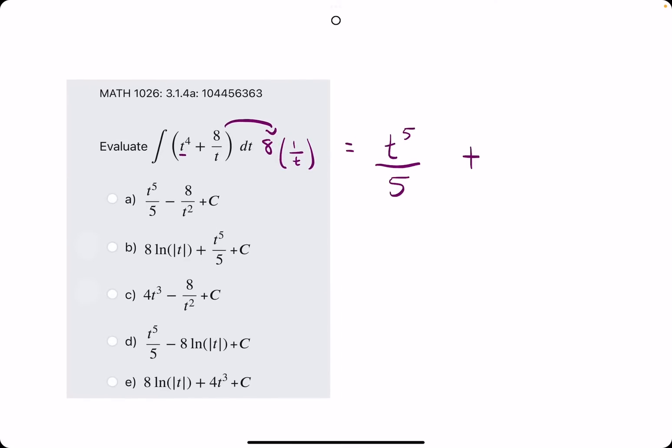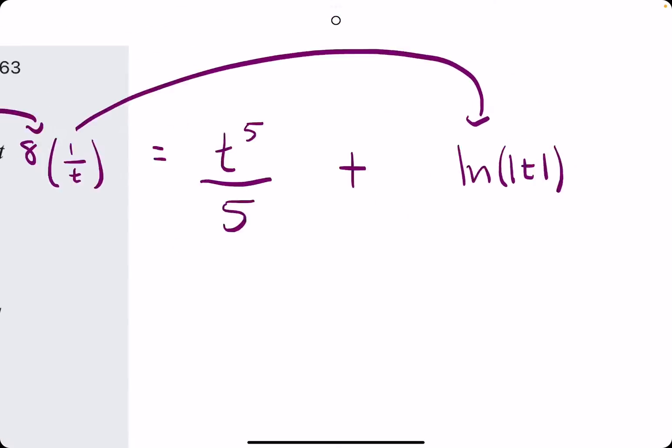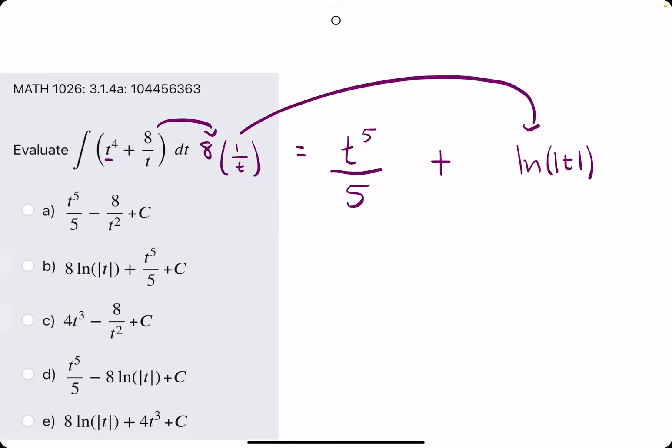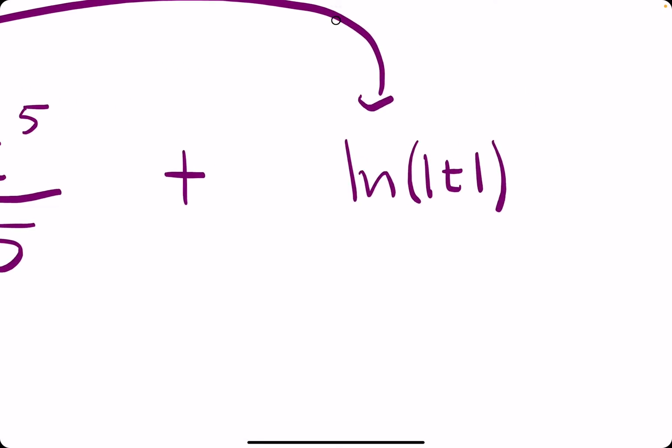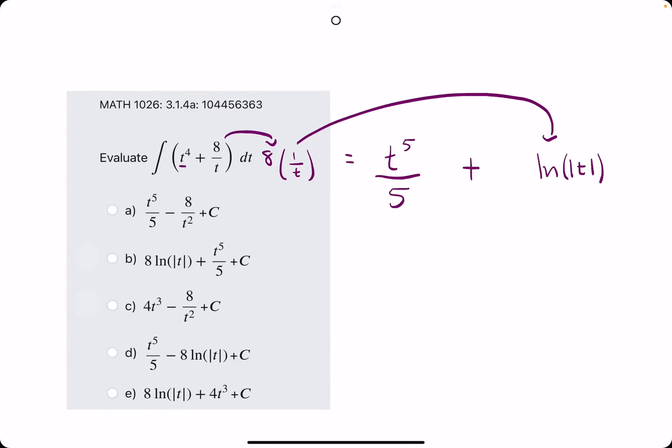We saw in another example that when we had 1 over t, the antiderivative of 1 over t does not use the reverse power rule because we actually get an error. We actually get ln of the absolute value of t. The derivative of ln of t is 1 over t, and so that's why we have 1 over t here.